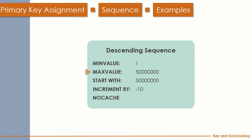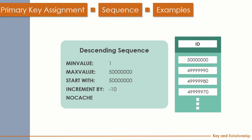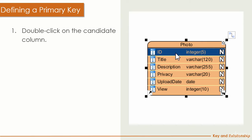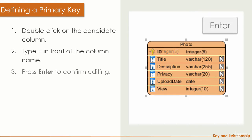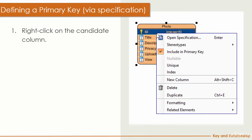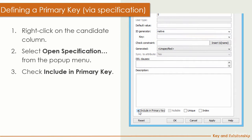For a descending sequence, set the same min and max values but start from the max value, and set the increment to a negative value. With no cache, when you insert records you get the ID pattern starting from the highest value going down. To define a primary key, you have two approaches: double-click the column and type a plus at the beginning then press Enter, or open the specification dialog box and check the Include Primary Key checkbox.